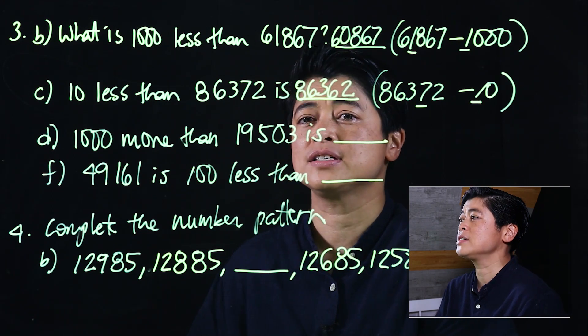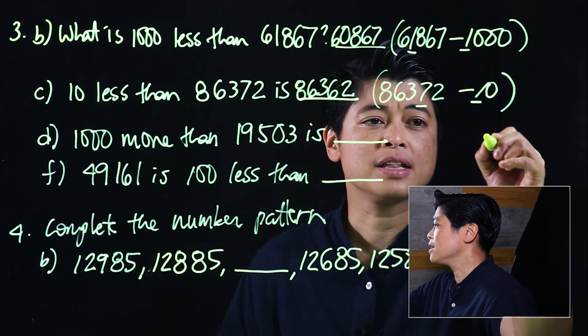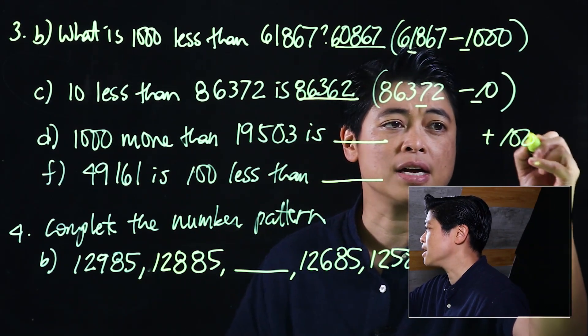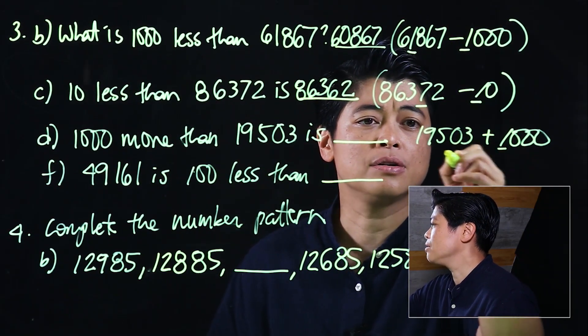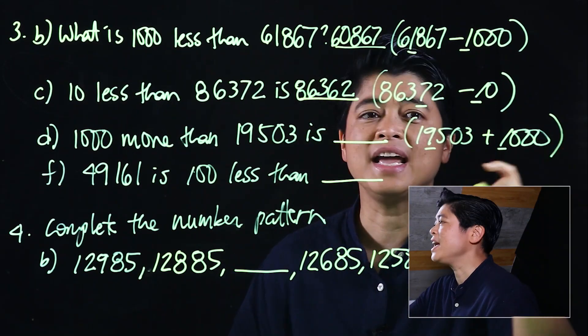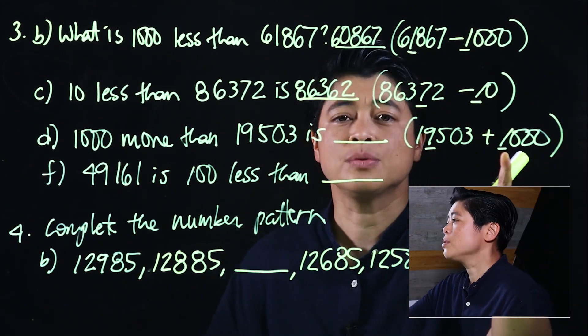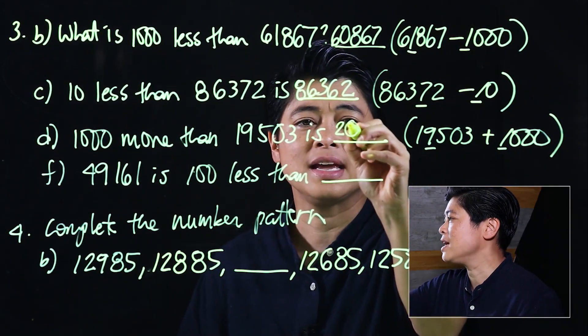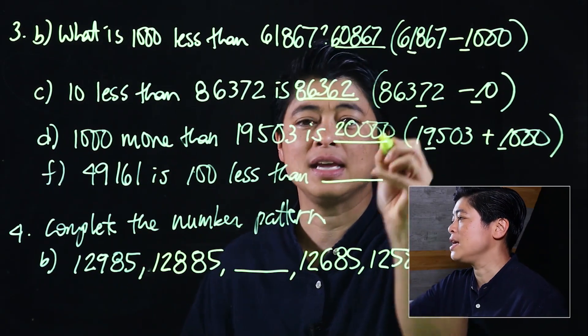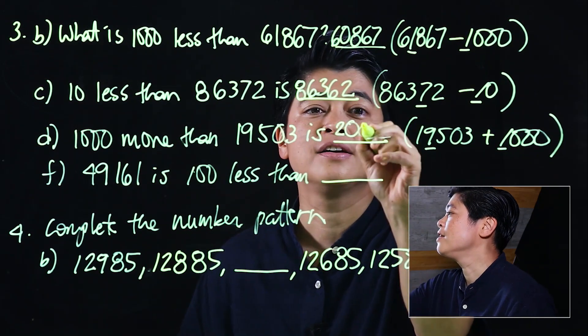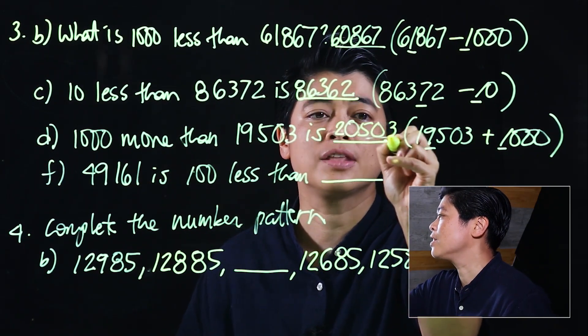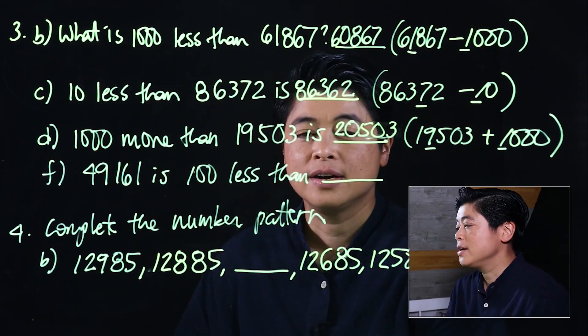That means we're going to add a thousand to 19,503. Looking at the thousands place, 19 plus 1 makes 20, which means that's 20,503.